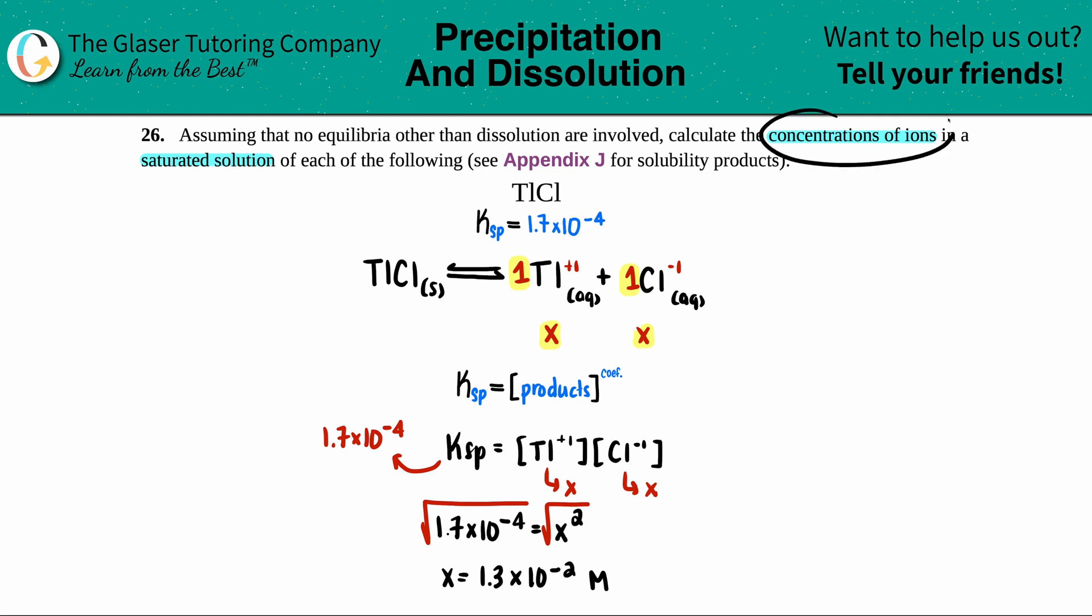Now they just wanted to know what those concentrations of the ions are. That's what your balanced equation was. So for the Tl, the concentration of Tl plus 1, that was just X. And the concentration of Cl minus, that was also just X. And we just found out what X was. So Tl was just equal to 1.3 times 10 to the negative 2nd molarity, and the same thing with the Cl: 1.3 times 10 to the negative 2nd molarity.